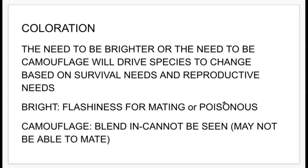This is where Müllerian and Batesian mimicry come into play. The wasp has black and yellow warning coloration and is harmful because it has a stinger. The wasp beetle mimics that same black and yellow coloration, but does not possess the harmful stinger like a wasp would — using that coloration for protection against predators.